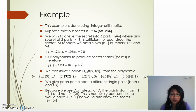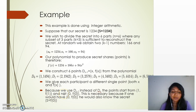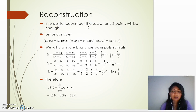Each participant is given a different single point (x, f(x)). We use x starting from 1 rather than 0, because putting x = 0 into the function would directly give the secret. That's why we avoid using the point (0, f(0)). To reconstruct the secret, 3 points are sufficient. Consider three points (x_0, y_0), (x_1, y_1), (x_2, y_2) and compute the Lagrange basis polynomials using the given equation.